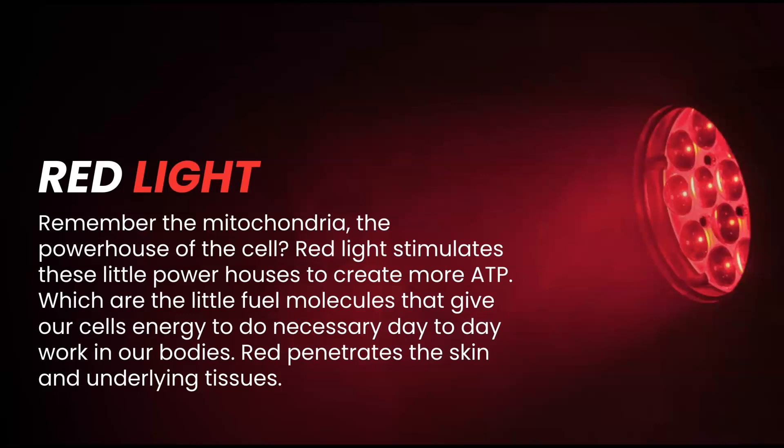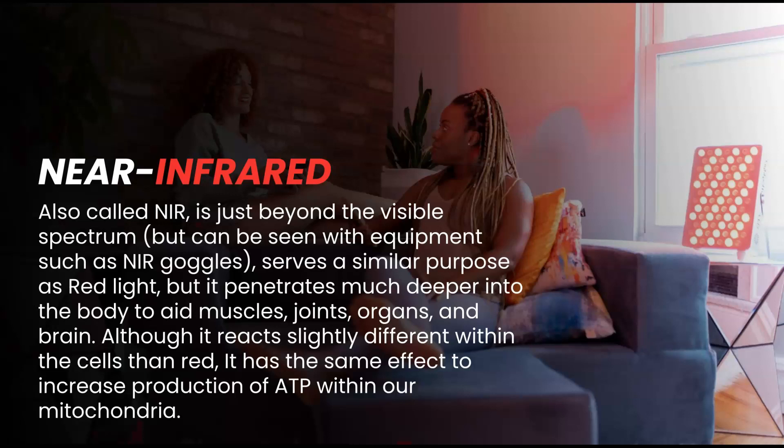Red light therapy is the common street name, as generally it's the red light that stands out to most, even though red is but one of the ranges of wavelengths used. Red wavelengths in the 600 to 700 nanometer range are among the most studied. Red light stimulates the mitochondria to create more ATP energy — the fuel molecules that give our cells energy to do necessary day-to-day work. Red penetrates the skin and superficial underlying tissue, blood, and lymph. Near-infrared, also called NIR, is just beyond the visible spectrum. It serves a similar purpose as red but penetrates much deeper to aid muscles, joints, organs, and brain, with the same effect of increasing ATP production within our mitochondria.